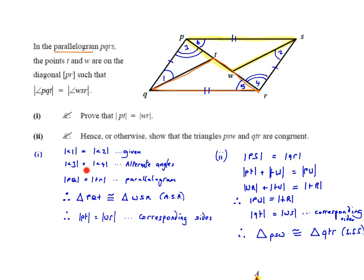Likewise, angle 3 is equal to angle 4 because they are alternate angles. You don't need to write the whole sentence — just 'alternate angles.' The length PQ is equal to the length SR because they are opposite sides of a parallelogram. So we've proven the two triangles are congruent. Therefore, triangle PQT is congruent with triangle WSR.